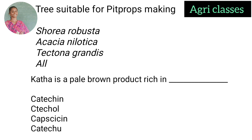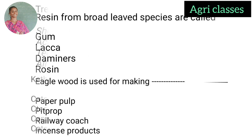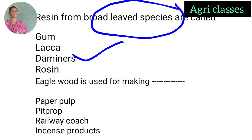Trees suitable for pit props making: Shorea robusta, Acacia nilotica, Tectona grandis, or all — correct answer is all of these are suitable for pit props making. Katha is a pale brown product. The correct answer is katha-chin. Resin from broad-leaved species is called damars — correct answer is damars.